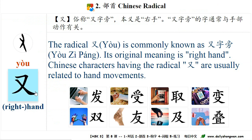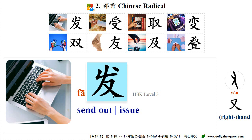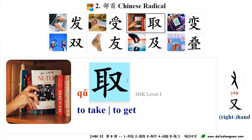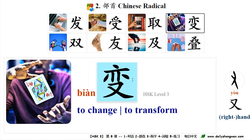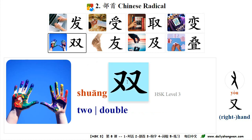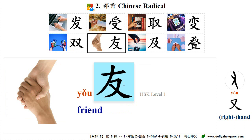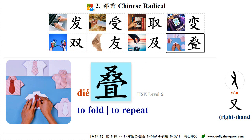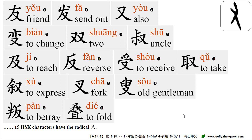Part two, Chinese radical 又 (又字旁), commonly known as 右字旁. Its original meaning is right hand. Characters with 又字旁 are usually related to hand movements. For example: 发 (send out), 收 (to receive), 取 (to take), 变 (to change), 双 (double — also used as a measure word, e.g., 一双手), 友 (friend, 朋友), 集 (to reach), 叠 (to fold). 15 HSK characters have the radical 又.